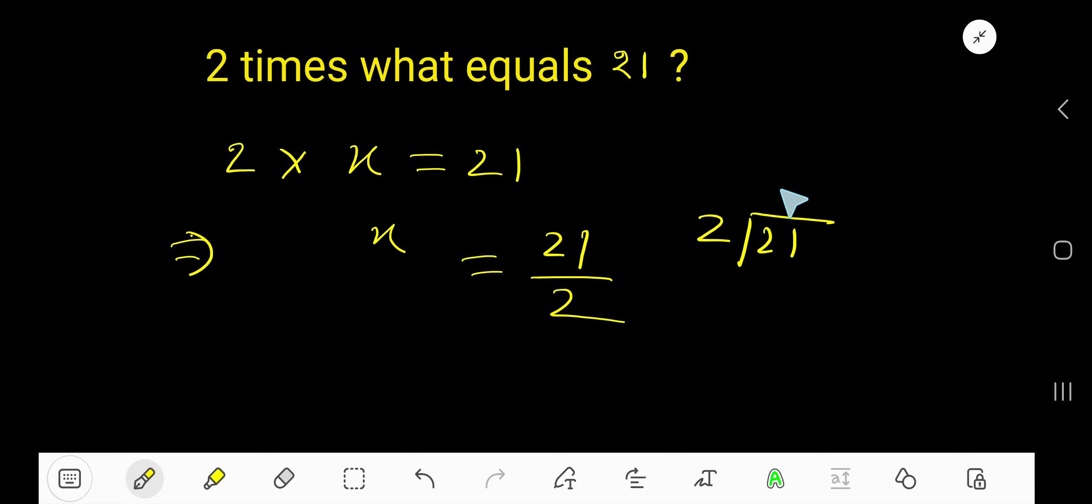2 goes into 2 how many times? 1 time. 1 times 2 is 2. If you subtract, you get 0. Bring down this 1. 2 goes into 1 how many times? 0 times. 0 times 2 is 0. If you subtract, you get 1. So this is your remainder and this is your quotient. The quotient 10 will be the whole number.